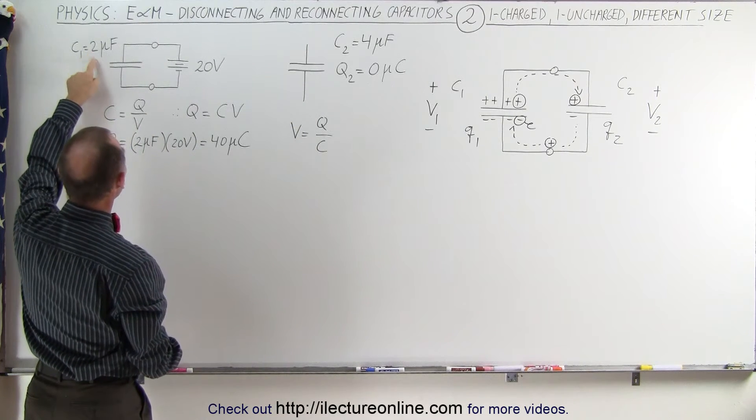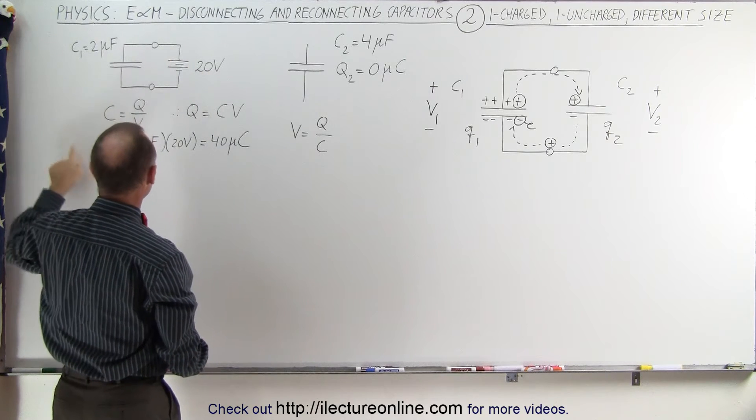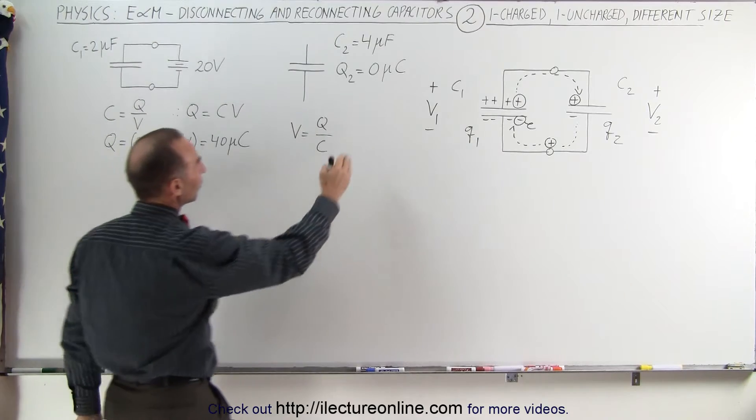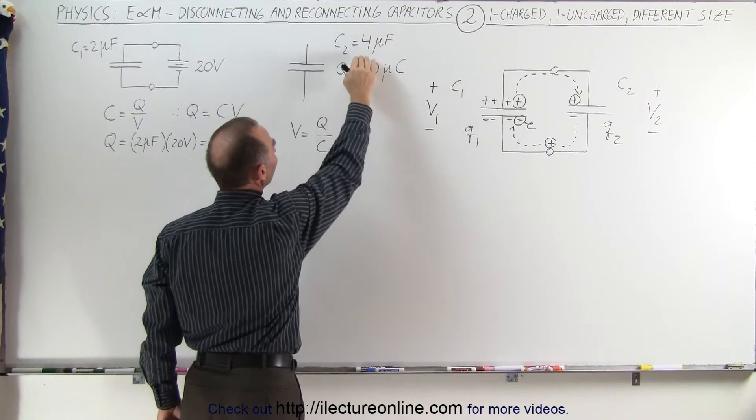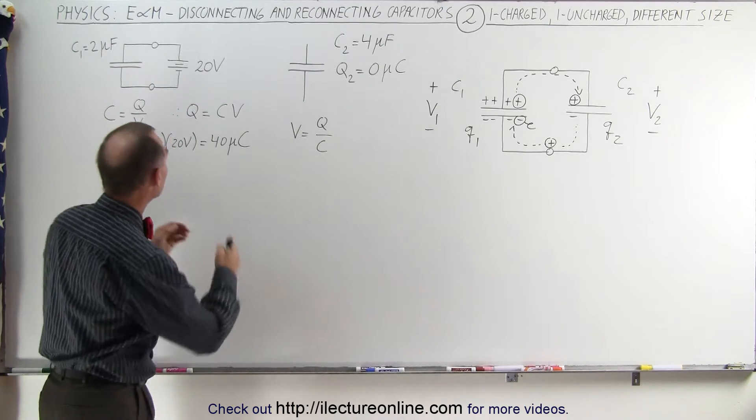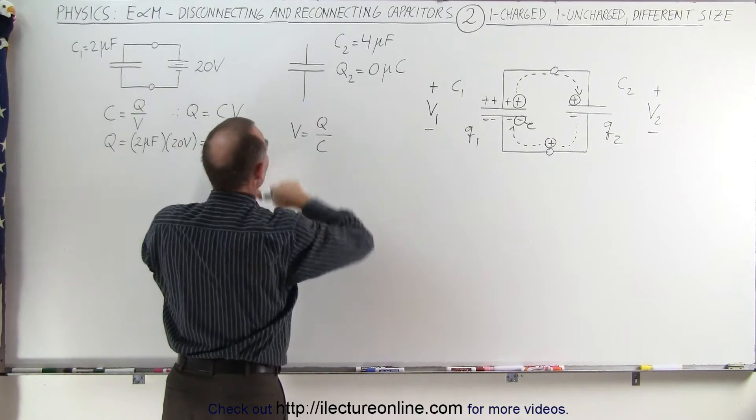The first capacitor is still a 2 microfarad capacitor which is connected to a 20 volt battery and thus charging up with a charge of 40 micro coulombs. The second capacitor has no charge on it but it's a 4 microfarad capacitor. Now you take the two capacitors, you disconnect this one from its battery and you connect it together with this capacitor.